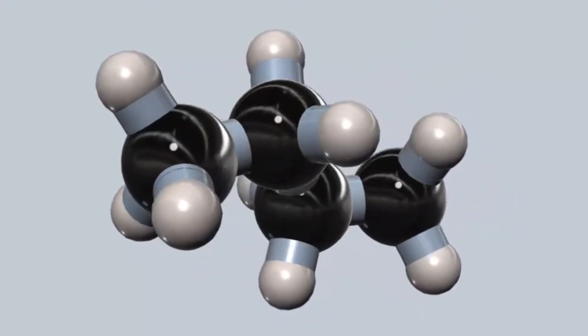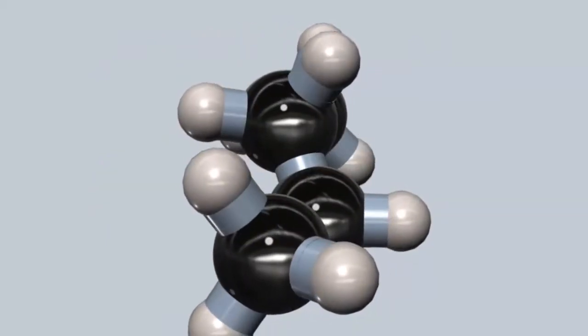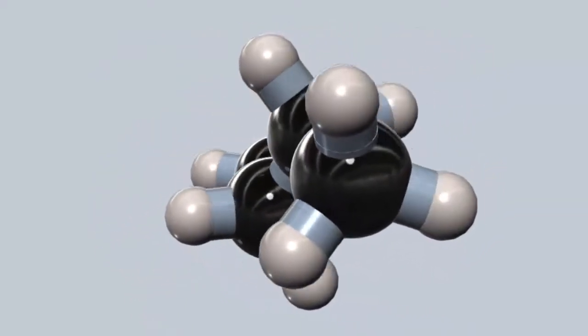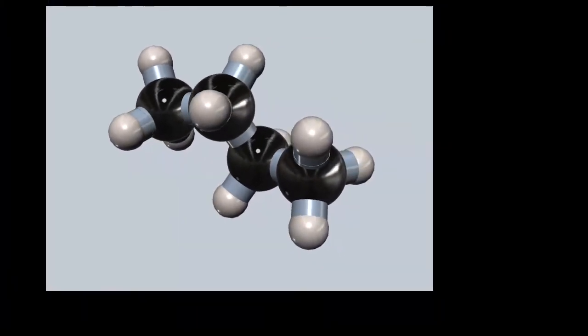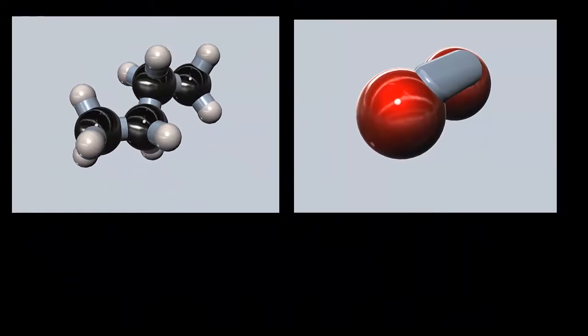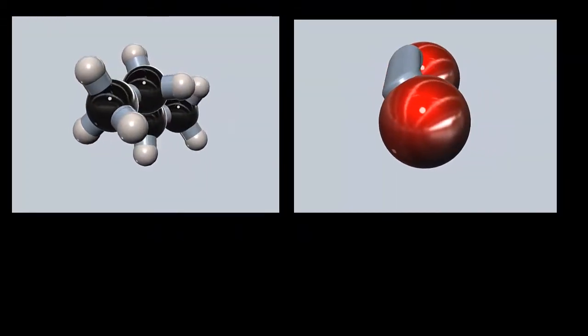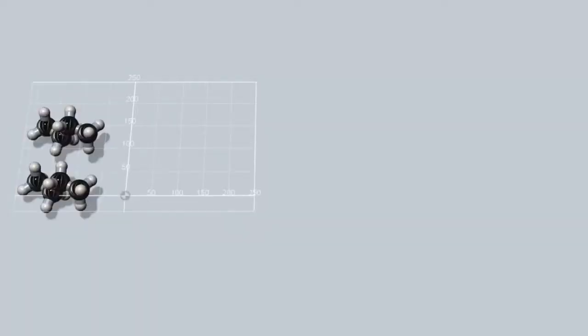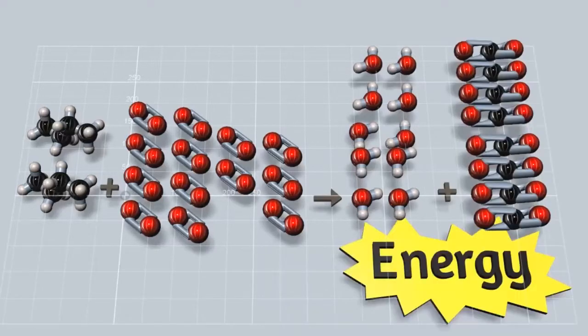This small and simple hydrocarbon is called butane. It has four carbon atoms bound together to create a carbon chain. Along with the carbon, there are ten hydrogens bound to the outside of the carbon atoms. When we burn them, these molecules undergo a chemical reaction with oxygen, or O2. This produces water, H2O, and CO2, and a lot of heat that we convert into useful energy in an engine.